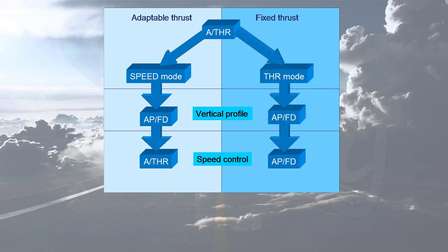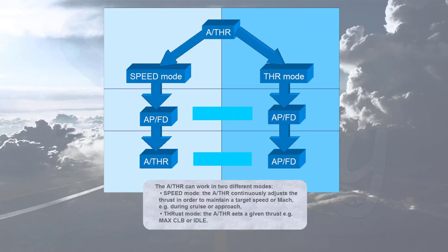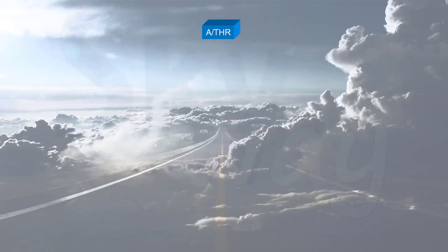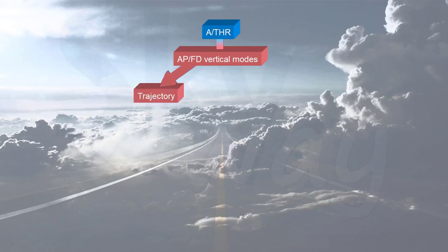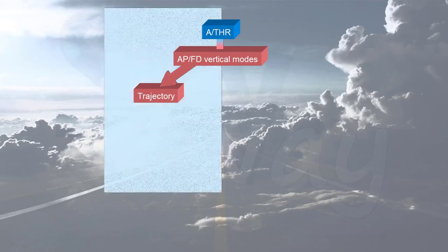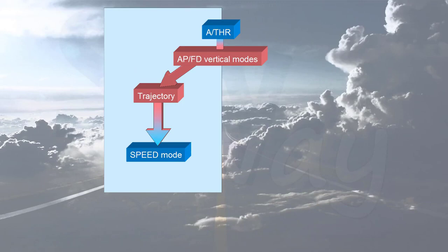In thrust mode, the autothrust sets a given thrust, for example max climb or idle. The autothrust modes are automatically linked to autopilot flight director vertical modes. When the autopilot flight director vertical mode controls a trajectory — such as altitude hold, vertical speed, or glide slope — the autothrust is in speed mode.